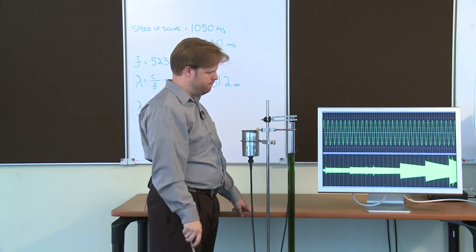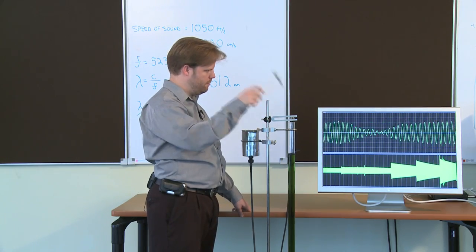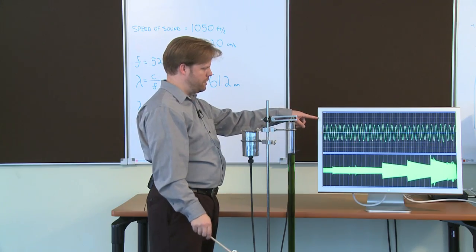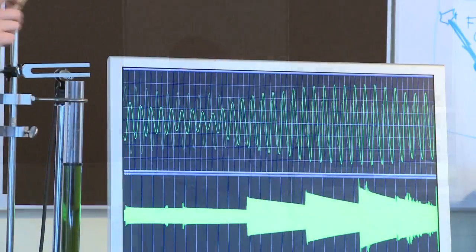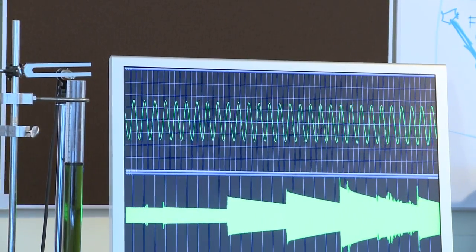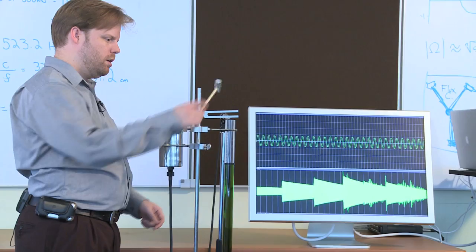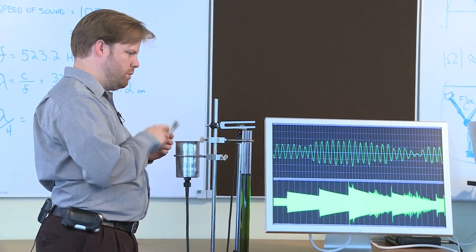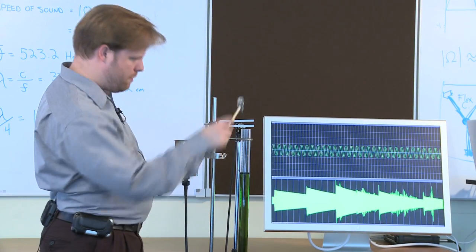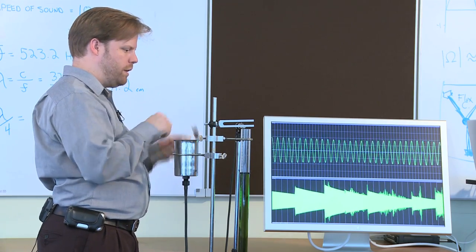There it is. See how greater the amplitude is now on the oscilloscope. What's happening now is our tube is resonating the frequency of the tuning fork. I can prove it by moving the tuning fork off the pipe.